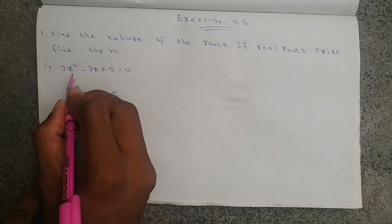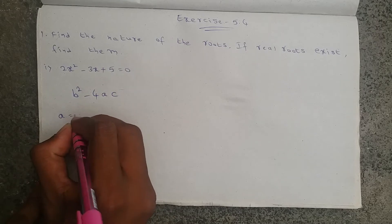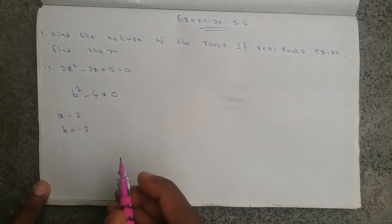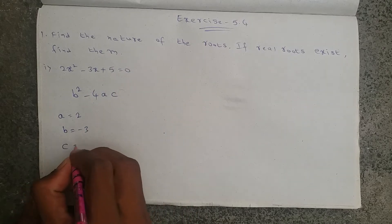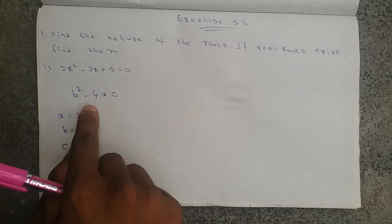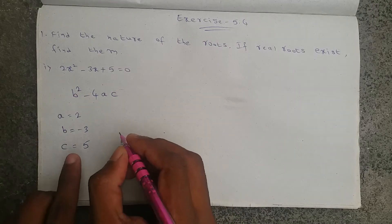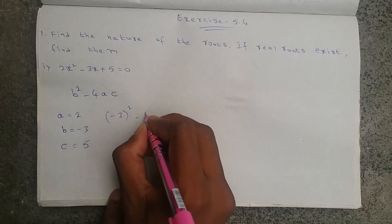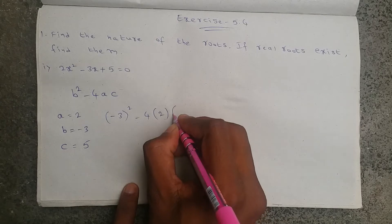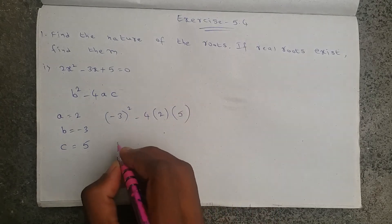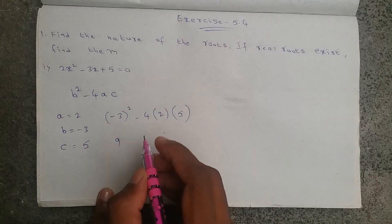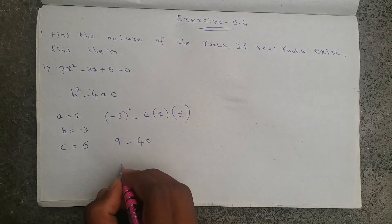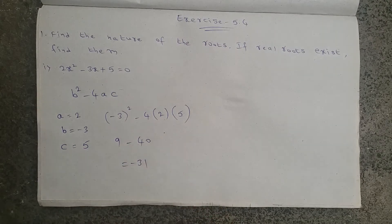The x² coefficient is a, so a equals 2. The x coefficient is b, so b equals minus 3. The constant is c, so c equals 5. Substituting into the formula: b² is minus 3 whole square, minus 4 into a value 2, into c value 5. Minus 3 squared is 9, minus 4 times 2 is 8, times 5 is 40. So 9 minus 40 equals minus 31.